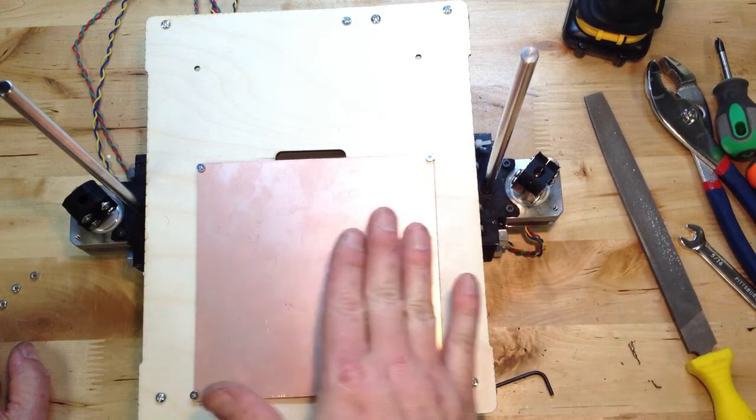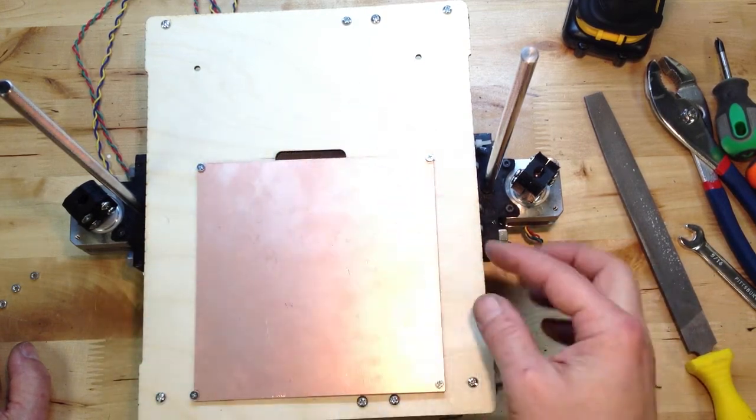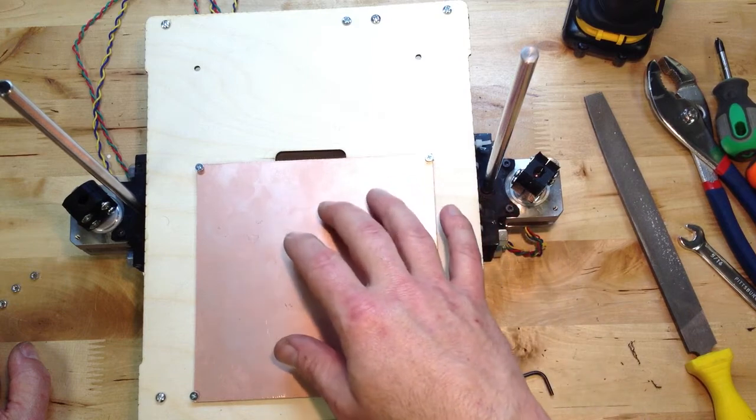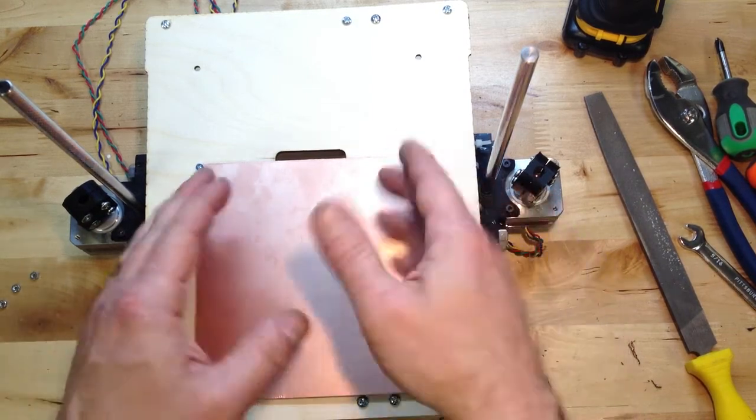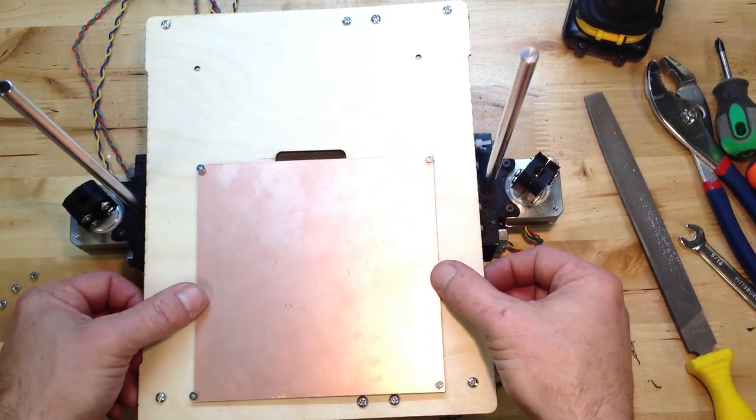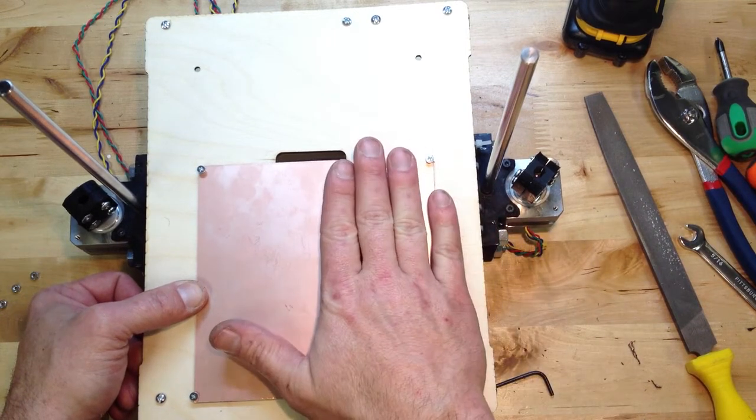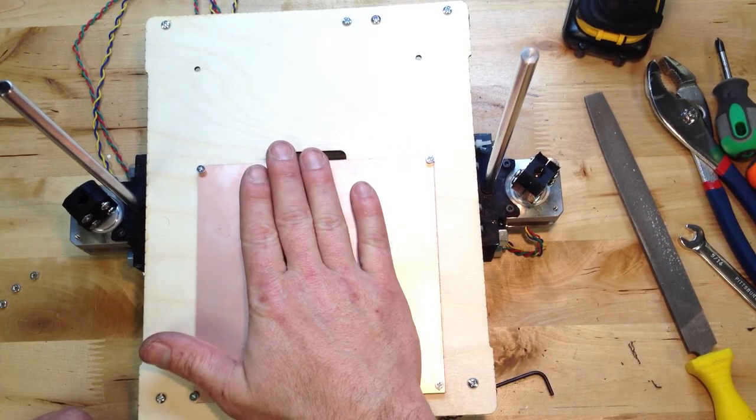The glass, what it does is, if there is any inconsistencies or if there's a little warp in this board, when a board gets hot, it'll warp just slightly. That glass will kind of compensate for that. And glass doesn't bend much.